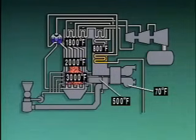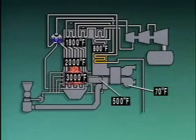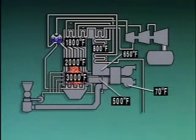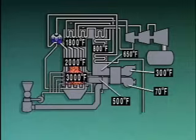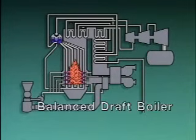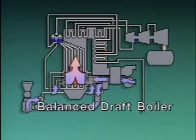The economizer uses heat from the combustion gases to raise the temperature of feed water on its way to the boiler. Feed water flows through the tubes of the economizer and the combustion gases flow around the tubes. When they leave the economizer, the combustion gases have cooled to about 650 degrees Fahrenheit. The gases then pass through the air preheater, where their temperature drops another 350 degrees. Finally, the gases flow through an induced draft fan and leave the boiler at about 300 degrees. This is a balanced draft boiler because it has both a forced draft fan, which pushes air in, and an induced draft fan, which pulls combustion gases from the furnace.